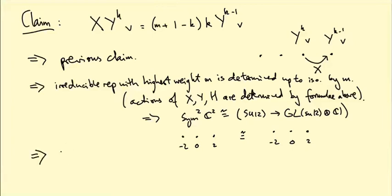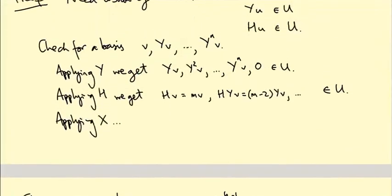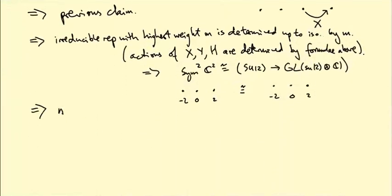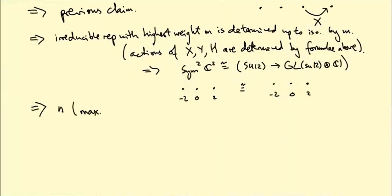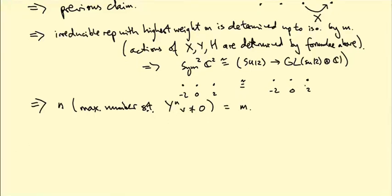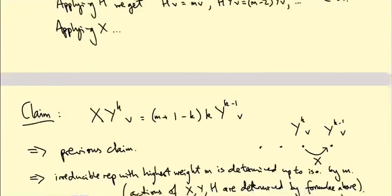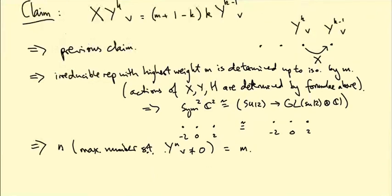The other thing it tells us is that N, which was the biggest power of Y that you can apply to V and not get zero, this is the maximal number such that Y to the N V is not zero equals M. So that's why we're getting these very symmetric weight diagrams, because if you look back up at the picture we had above, you go from M down to M minus 2N, and if N equals M, that's minus M. So it goes from M down to minus M, so it's symmetric about the origin.